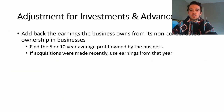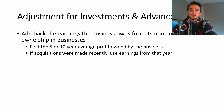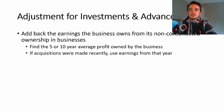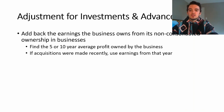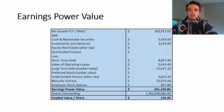Next, you make an adjustment for non-consolidated subsidiaries, also known as investments and advances. You add back the earnings the business owns from its non-consolidated ownership. This differs from the balance sheet value for investments and advances — you only include what the company has reported those investments produced over the last five to ten years. I'll typically take the five-to-ten year average of profit owned, or if the acquisition was recent, just use the earnings that investment provided the company that year.